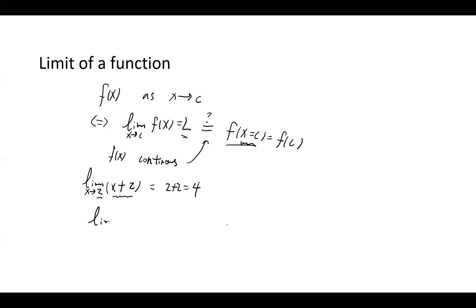Similarly, we can ask: what is the limit of x + 1 as x goes to 2? The answer is 3. Any other linear functions behave the same way. This is the case when f(x) is continuous.